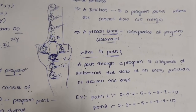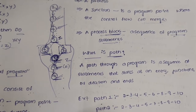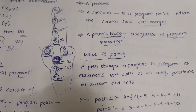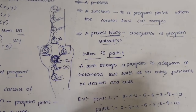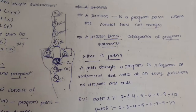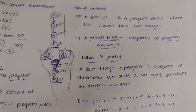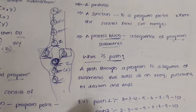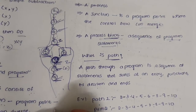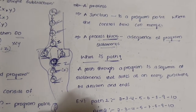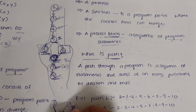A path may go through several junctions, process blocks, or decisions. The smallest segment of a path is a link between two nodes. For example, 8 to 9 and 6 to 8 are segments.